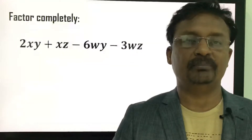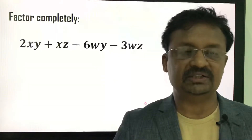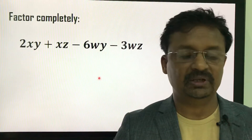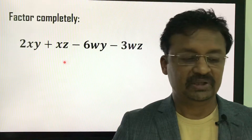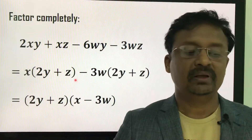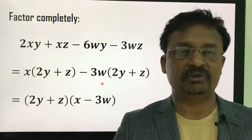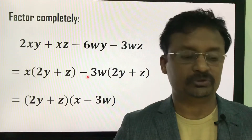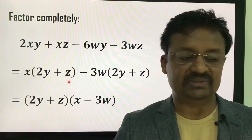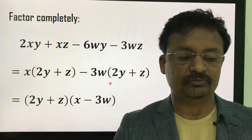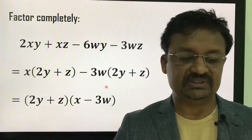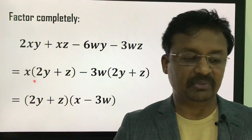I will explain with another example using the same grouping method. The polynomial is 2xy + xz - 6yw - 3yz. There are four terms. Group the first and second terms: x is the common factor. From the third and fourth terms, take -3w as the common factor, including the negative sign. This gives x(2y + z) - 3w(2y + z). Now take (2y + z) as a common factor, giving (2y + z)(x - 3w).